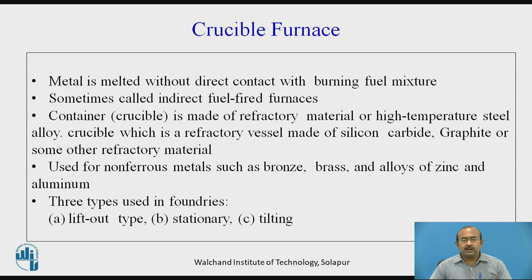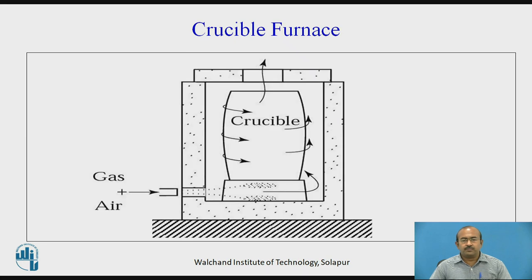There are three types of crucible furnace in foundry: lift out type, stationary type, and tilting type. In the heavy brick wall structure, the crucible is present. The gap between the crucible and the heavy walled structure contains a gas-plus-air mixture where burning takes place, and fumes escape out from the top side.